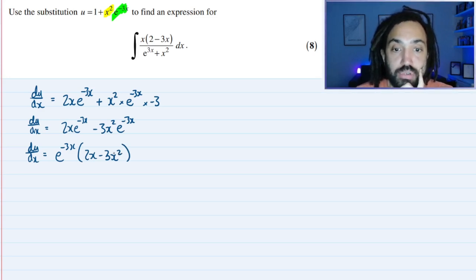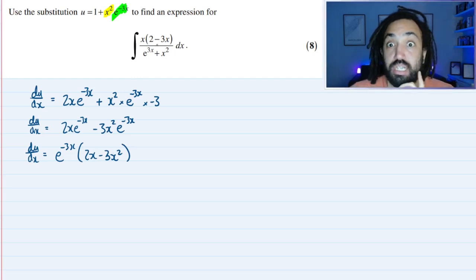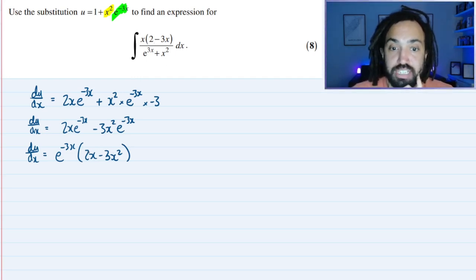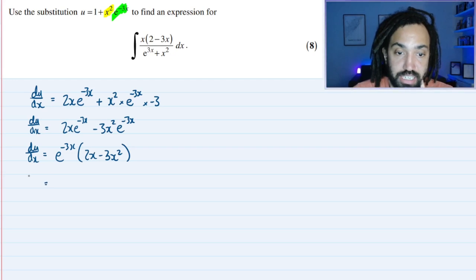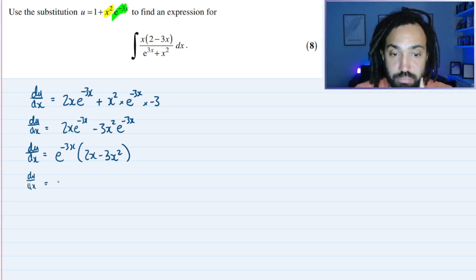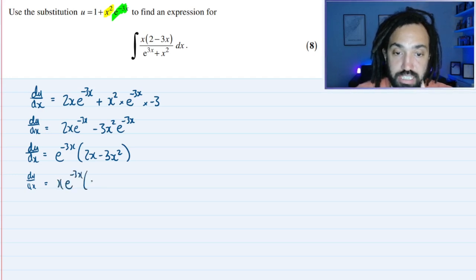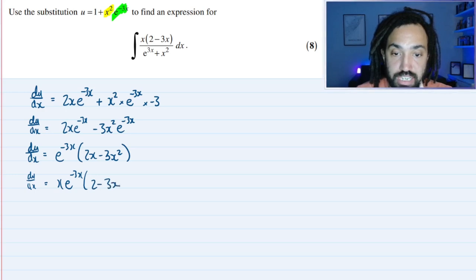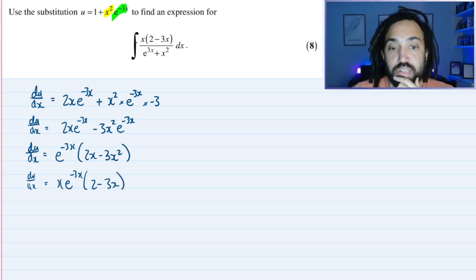Now I'm looking at the integral, and I can see this is very similar but not exactly the same. If I take out an x actually, that will help, I think, because that would make it look a bit more like it. I can take out an x outside, and that gives me 2 - 3x. That looks good.